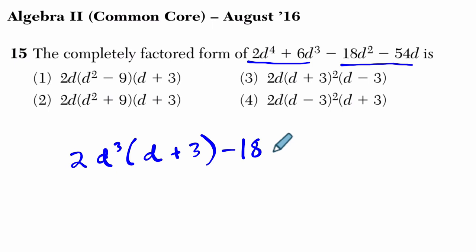In the second one, we can factor out negative 18d, and what will be left over is d plus 3.